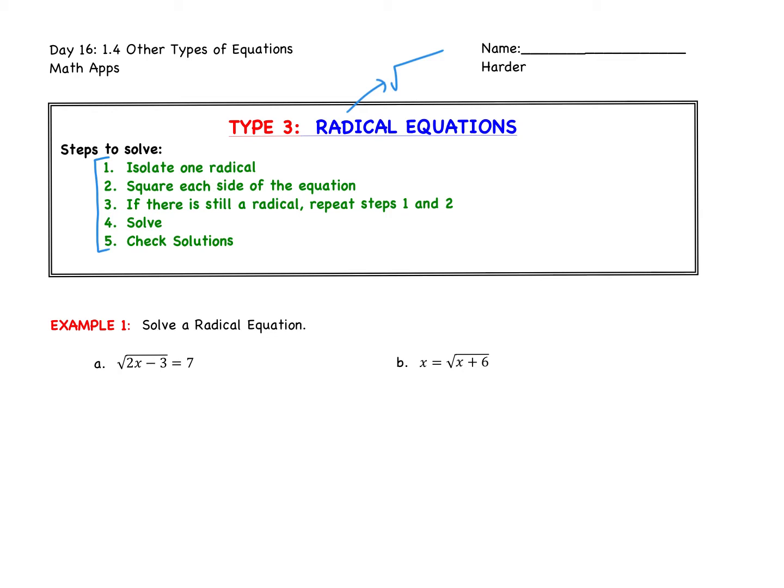Two important things here. First, checking your solutions — similar to an absolute value equation, you're going to have to plug your answers back in and show that they work. Also, step three about repeating for multiple radicals we can ignore — we are not going to do any examples where there's more than one radical. So let's jump right into a few examples.